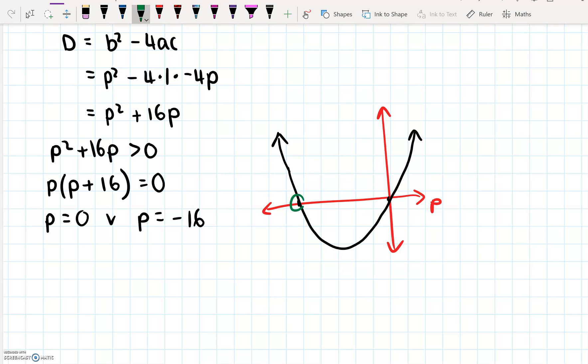Now, we know this value here is minus 16, and this value here is zero. And we want to know where the parabola, I'm going to highlight this, the parabola is above zero. So where is it above zero? It's above zero outside here, and outside on the other side as well. So this is where our parabola is above zero.